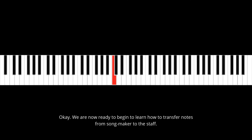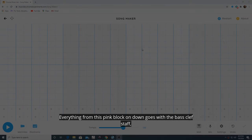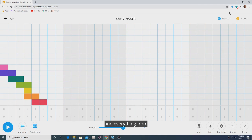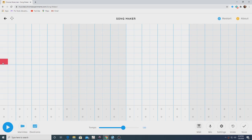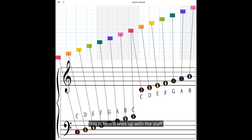Okay, we are now ready to begin to learn how to transfer notes from Song Maker to the staff. Everything from this pink block on down goes with the bass clef staff, and everything from this orange block on up will go with the treble clef staff. This red block right here in the middle can go with either the treble clef staff or the bass clef staff. This is how it lines up with the staff.